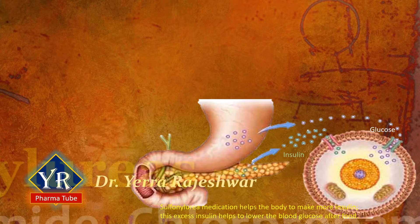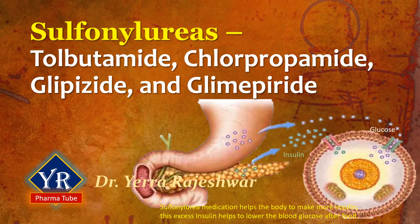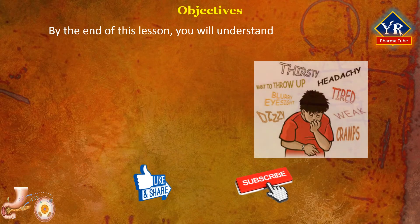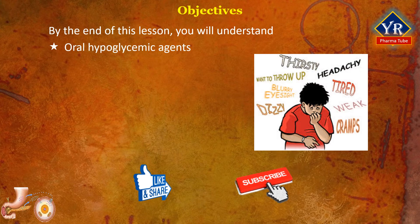In this lesson, I would like to discuss the sulfonylureas, which are a type of oral hypoglycemic agents, and their individual drugs such as tolbutamide, chlorpropamide, glipizide, and glimepiride. By the end of this video, you will understand oral hypoglycemic agents that act as anti-diabetic agents, their chemistry, classification, and uses.